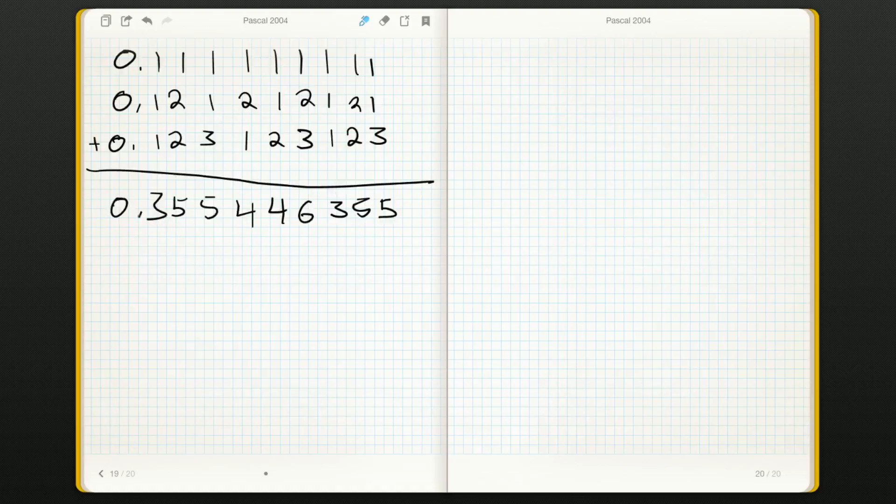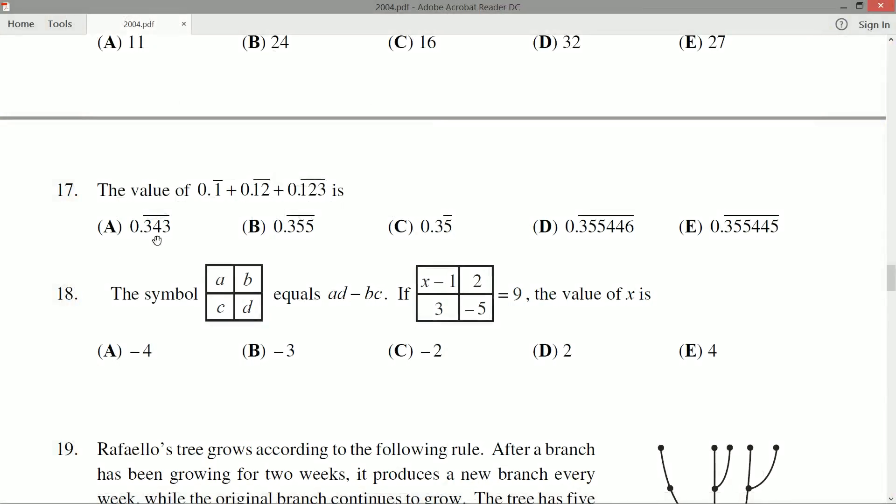So of all of these possible answers, only two of them even have any 4s in there. Oh sorry, this one has a 4 in here. But we're looking at something that starts at 3, 5, 5, 4, 4, 6, and the only one we've got that does that is D.